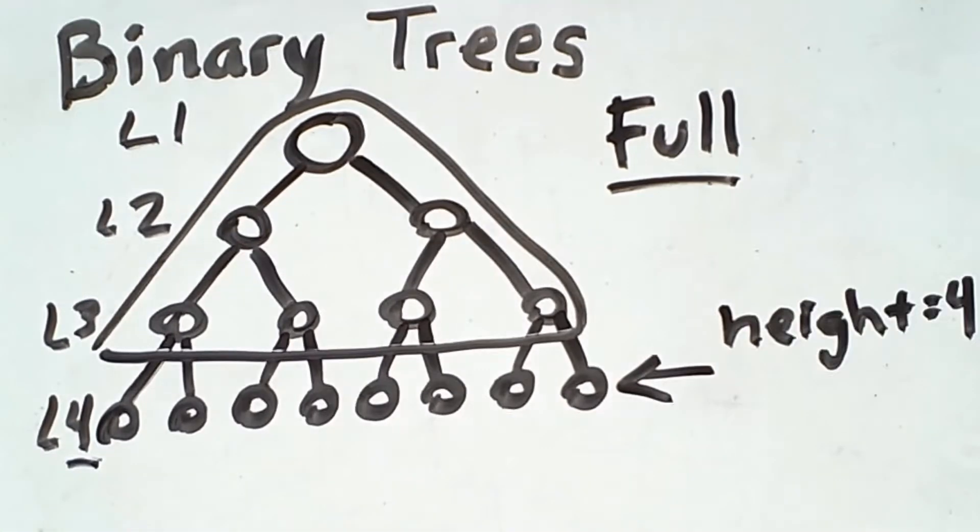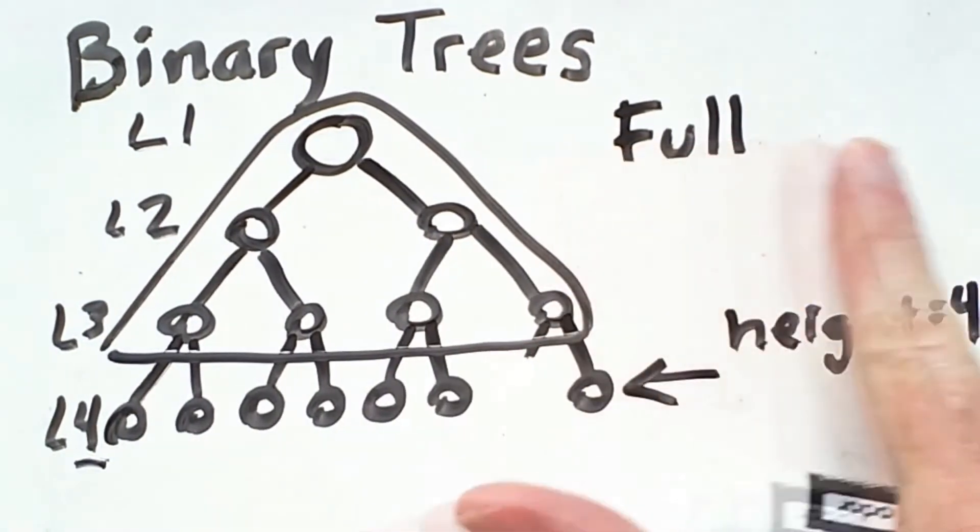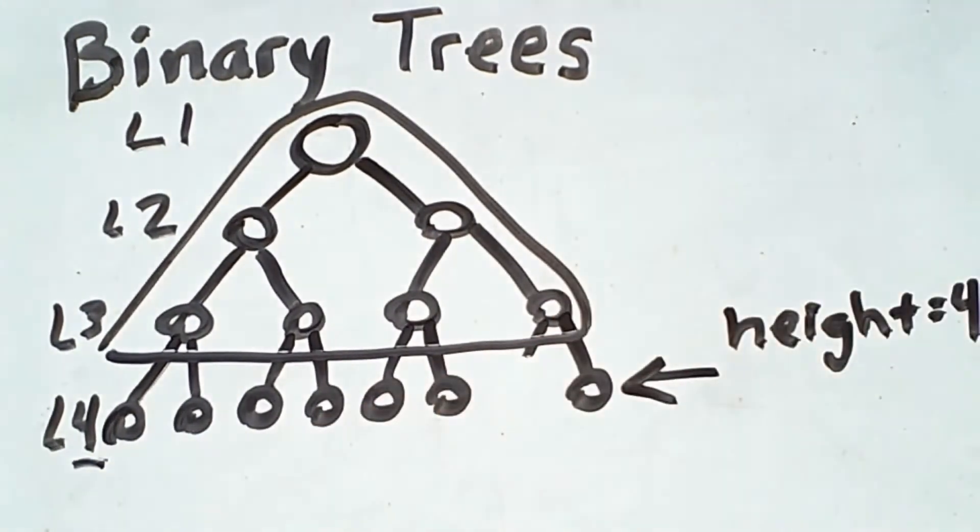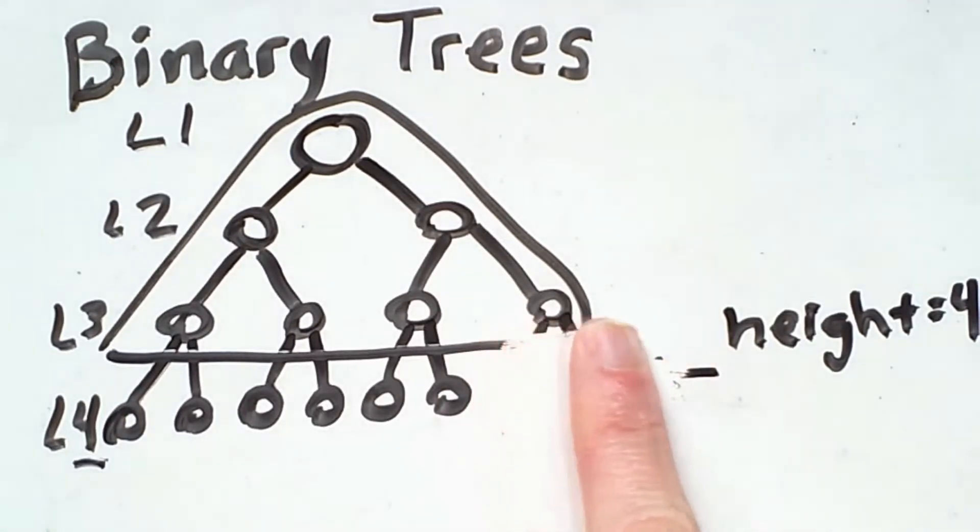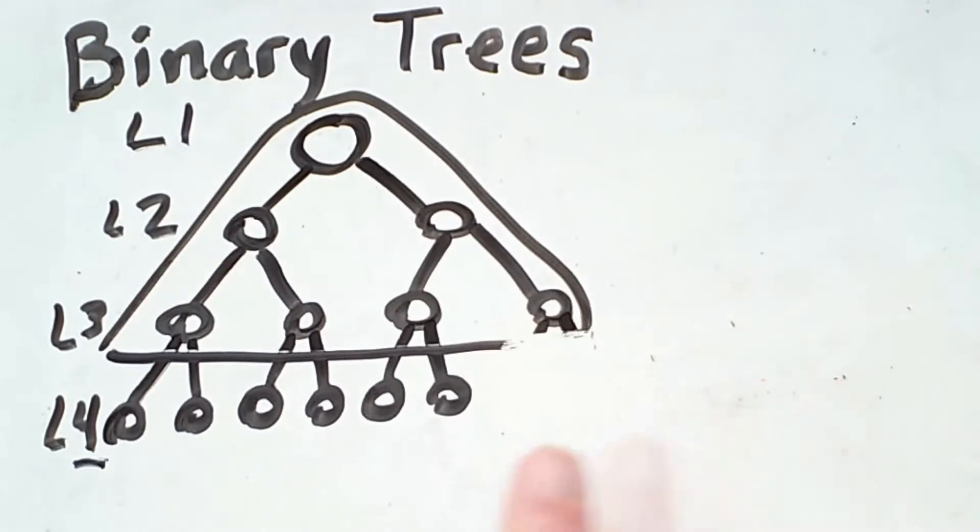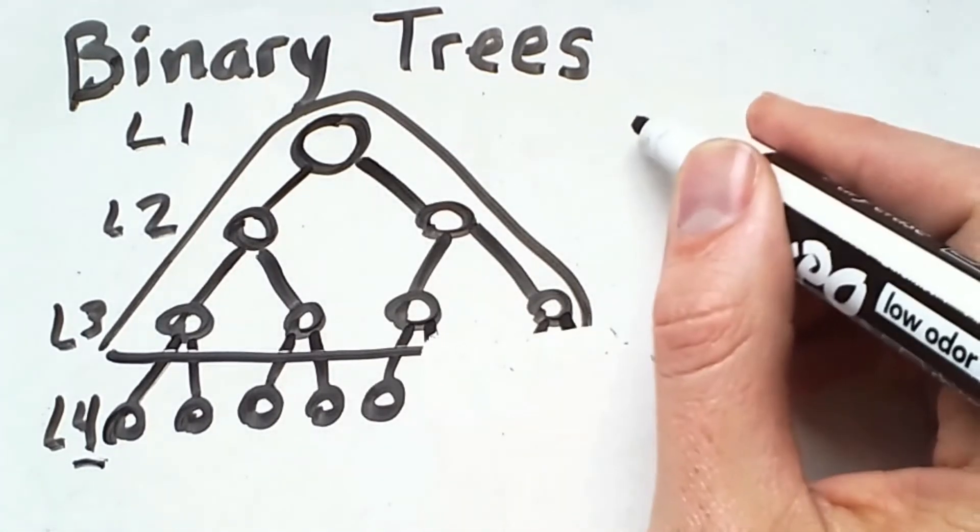Now, if I remove any of these nodes, this is no longer a full tree. However, if I only remove leaf nodes from the right side, then I have a special type of tree known as a complete tree.